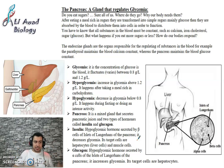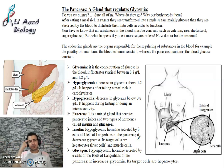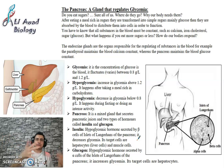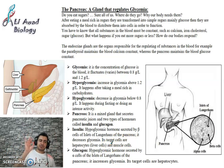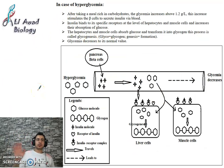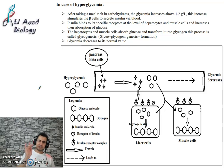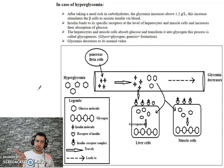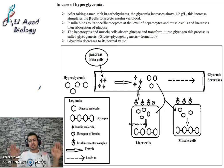Glucagon acts on the liver, signaling it to release stored glucose back into the blood in order to maintain glycemia. Glucagon is a hyperglycemic hormone that increases glycemia. The cause of hyperglycemia is eating carbohydrates — eating a meal rich in carbohydrates.